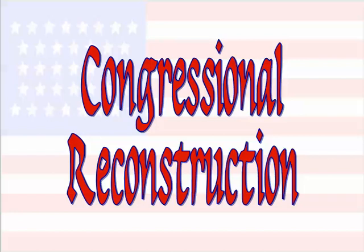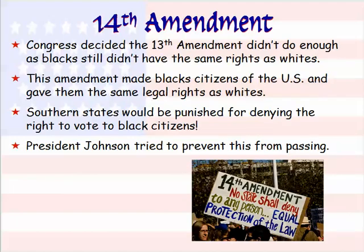Let's move on to Congressional Reconstruction — Congress's plan for reconstructing our country. It started with the 14th Amendment, where Congress decided that the 13th Amendment didn't go far enough to give Blacks equal rights. The 14th Amendment made Black people citizens of the United States and gave them the same legal rights as whites, including full-fledged citizenship. It also stated that Southern states could be punished for denying the right to vote to Black citizens. However, President Johnson tried to prevent this amendment from going through.